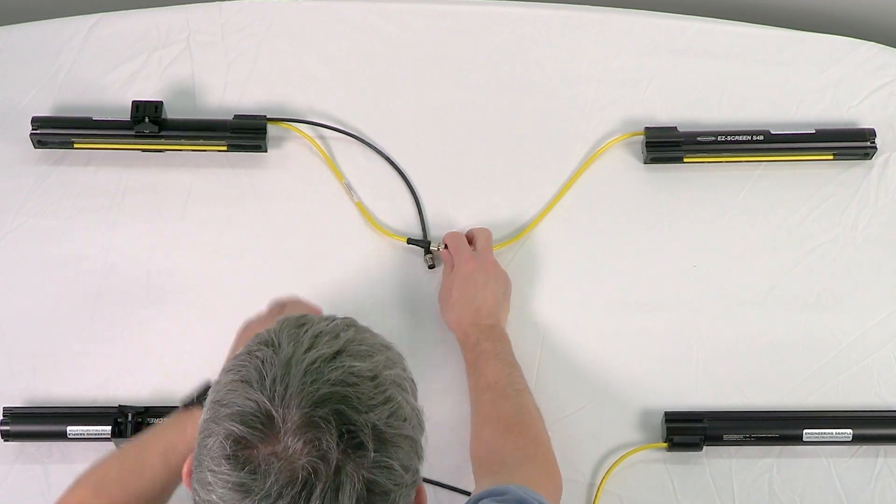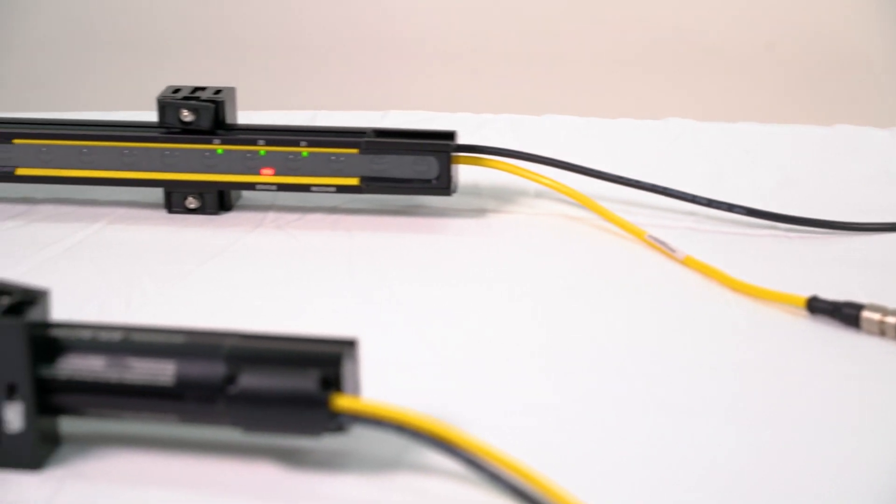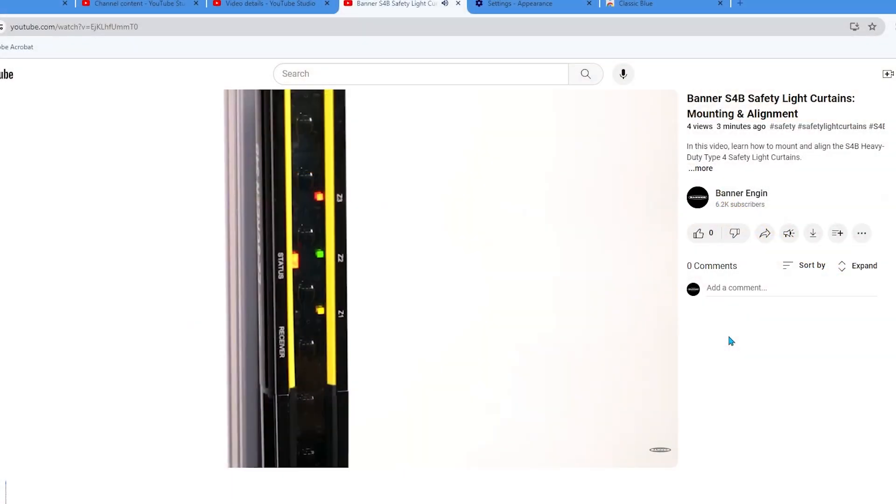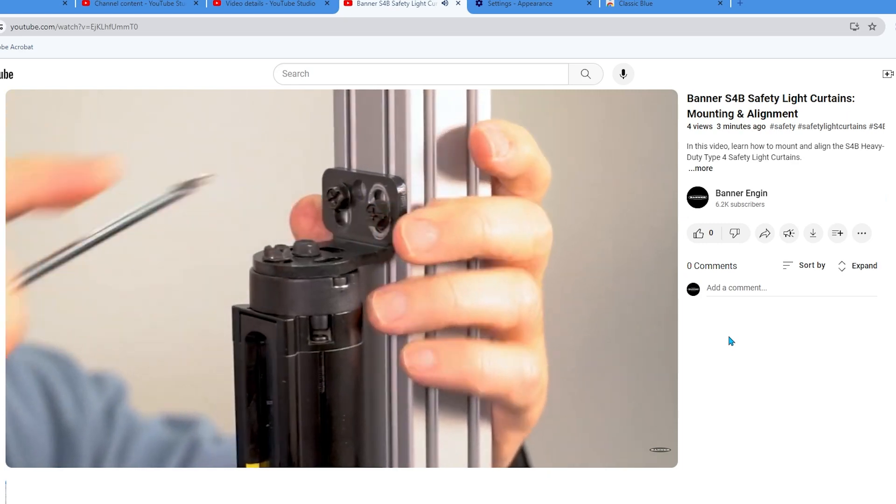This is a short how-to video that will cover the basics of cascading the S4B heavy-duty Type 4 safety light curtains from Banner Engineering. If you need assistance with mounting and aligning a curtain, check out our video on how to set up a new S4B light curtain.